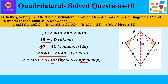An important point to note here is that in SAS congruency the angle has to always be the included angle between the two sides. Here, BA and AO were the two sides with included angle BAO; similarly, AD and AO were the two sides with included angle DAO. So you must be careful that the angle is the included angle.